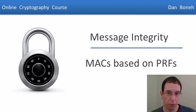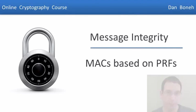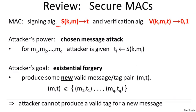Now that we know what MACs are, let's go ahead and build our first secure MACs. First, I want to remind you that a MAC is a pair of algorithms. The first is a signing algorithm that, given a message and a key, will generate a corresponding tag. The second is a verification algorithm that, given a key, a message, and a tag, will output 0 or 1 depending on whether the tag is valid or not.